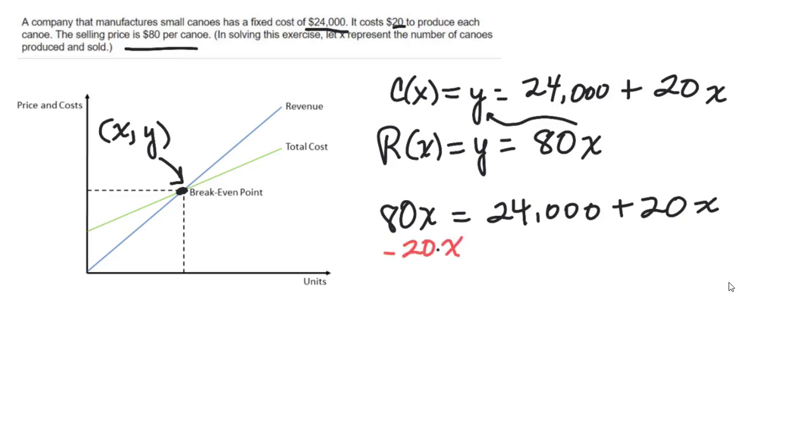So that cancels that out. I get 60x equals 24,000, dividing both sides by 60.